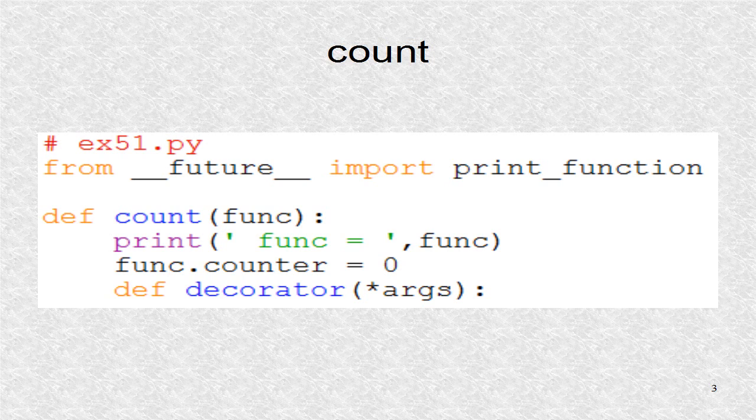Next, a variable counter is set to zero. This variable is attached to the particular function, so there are separate counters for each function. These outer lines will be only done once, per decorated function, as we will see later.